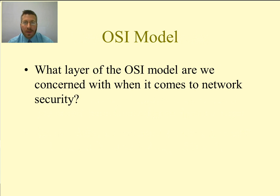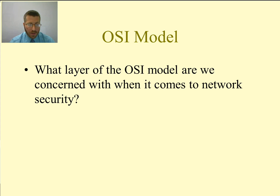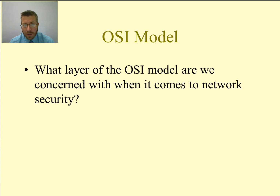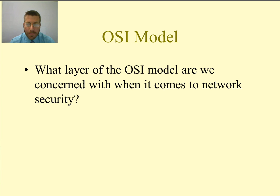Last semester we talked about the OSI model, which is the open systems interconnection model. There are seven layers to the OSI model: the first layer is the physical layer, second is the data link layer, third the network layer, fourth the transport layer, fifth the session layer, sixth the presentation layer, and the seventh is the application layer.